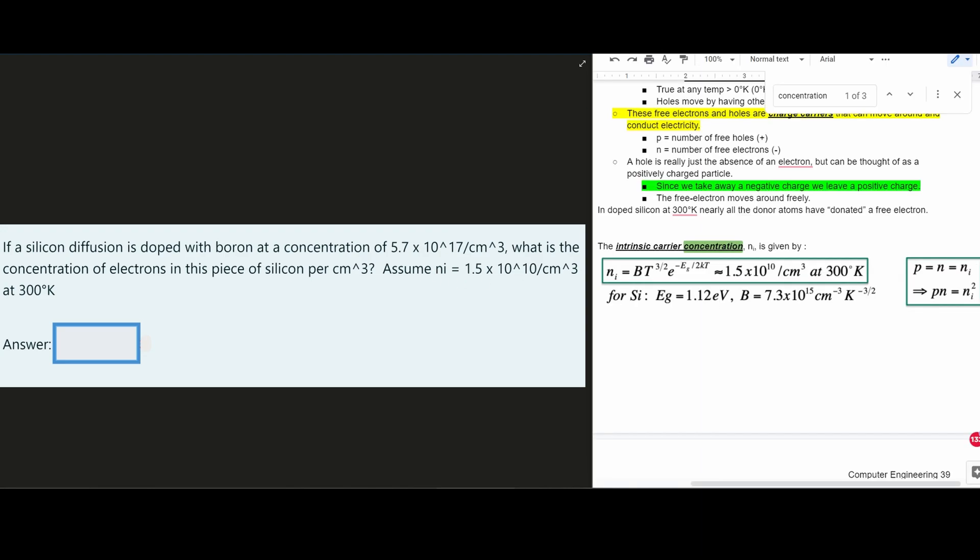So if we look at the notes linked below the like button, we have the following formula, and we can just do a control F and find concentration. So concentration of electrons. Electrons is n. So we're going to use this equation that we have right here.